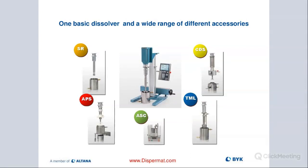The CDS has a closed chamber with a viewing glass on top, so you can actually see what's happening during the process. You can oscillate the blade and change the blade position while seeing what you're doing because of that viewing glass. On the top right, there is an attachment called a TML — that is our basket mill, which is very helpful if you're trying to mill materials.